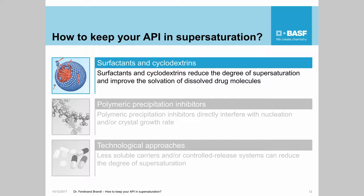Surfactants and cyclodextrins reduce the degree of supersaturation by increasing the solubility of the drug, and they also improve the solvation of dissolved drug molecules. This improved solvation results in a decreased nucleation rate and decreased crystal growth rate. In addition, cyclodextrins can also adsorb to the surface of growing crystals, driven by the formation of hydrogen bonds, which also interferes with the crystal growth rate.